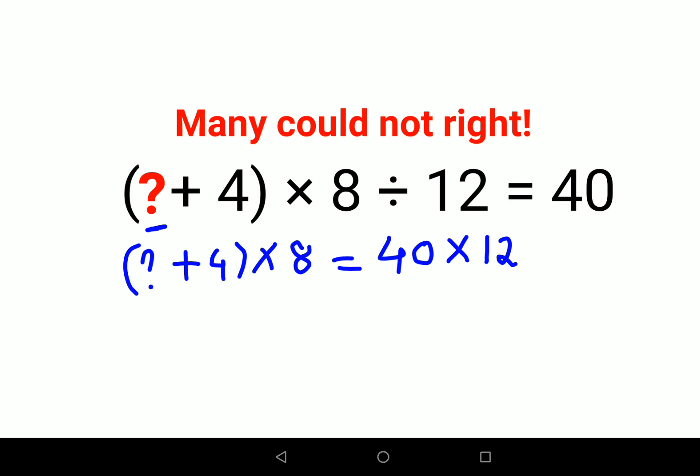And next what we will do is since your 8 is getting multiplied, so here we will divide both sides by 8. So this and this is cancelling. This is 1's and 5's.